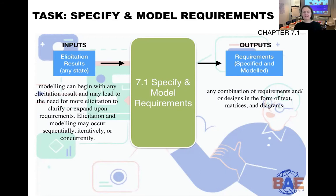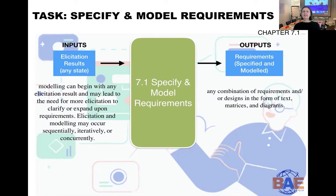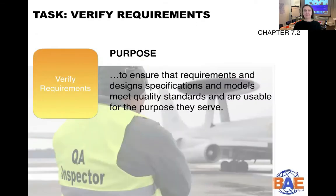Once you've taken all your elicitation results and done some modeling, what do you have at the end? You'll have requirements that are specified and modeled. It's important to get familiar with the different statuses of requirements when described as inputs or outputs. Here the status is 'specified and modeled.' The BABOK describes it as any combination of requirements and/or designs in the form of texts, matrices, and diagrams — basically any artifacts produced to describe requirements transformed from elicitation results. If you tell yourself a story like that for each task, it will help you remember the individual inputs and outputs.